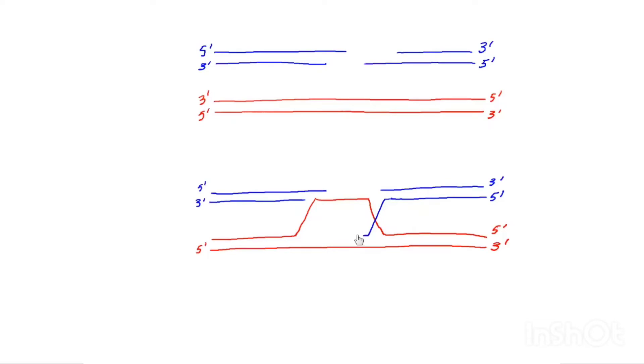Now that we've formed a D-loop, DNA polymerase can come along. And at this point, at this 3' overhang, it can begin copying the homologous DNA.